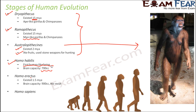Next was Homo erectus, who existed 1.5 million years ago. Their brain capacity increased even further to about 900 cc. Homo erectus also ate meat, making them omnivorous — they ate both vegetables as well as meat.